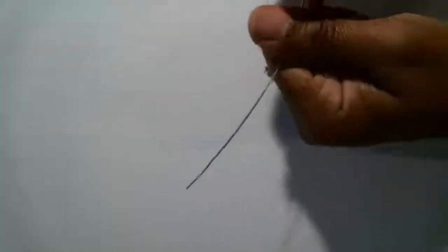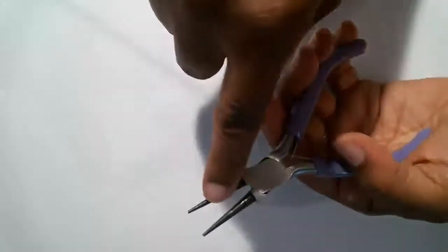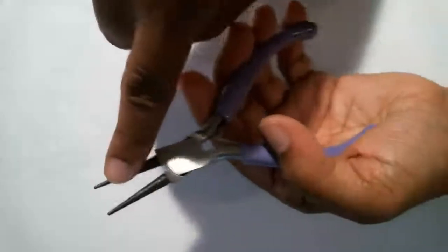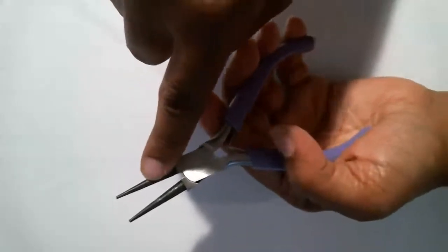So grab a piece of 20 gauge wire and what are we doing? Warming it up. Take your round nose pliers.